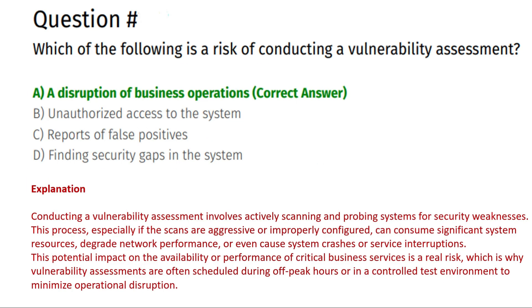The next question is: which of the following is a risk of conducting a vulnerability assessment? Option A: A disruption of business operations. Option B: Unauthorized access to the system. Option C: Reports of false positives. Option D: Finding security gaps in the system. The correct answer is Option A, a disruption of business operations.